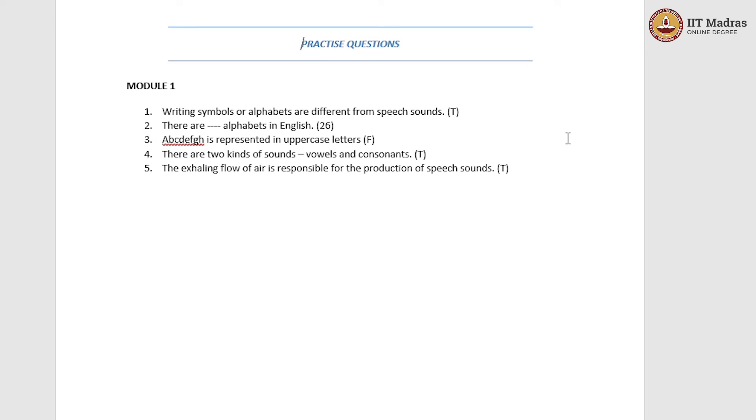The next question is, there are two kinds of sounds, vowel and consonant sounds. We have already discussed this while discussing the second question. Oral sounds are of two types, vowels and consonants. So, the statement is true.